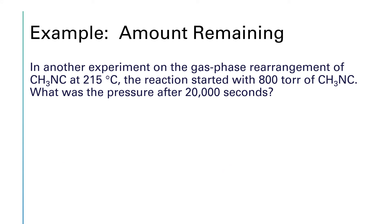This example tells us that in another experiment on the gas phase rearrangement of CH3NC at 215 degrees Celsius, the reaction started with 800 Torr of CH3NC. What was the pressure after 20,000 seconds? All right, this is an integrated rate law problem. You can substitute in the time of 20,000 seconds. You can solve for A sub t. But let's take this from the half-life approach.